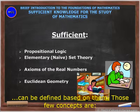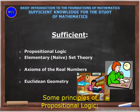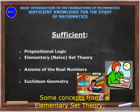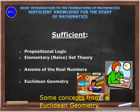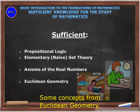Those few concepts are some principles of propositional logic, some concepts from elementary set theory, the axioms of real numbers, and some concepts from Euclidean geometry.